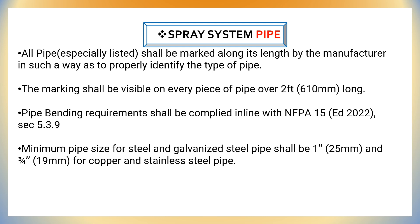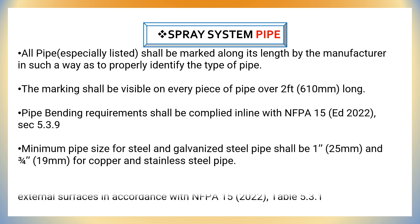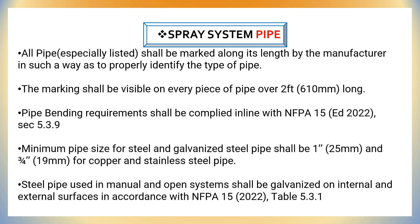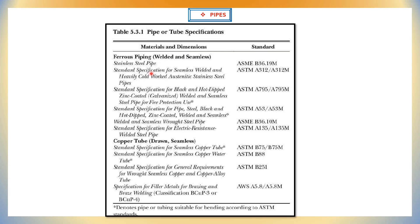Minimum pipe size for steel and galvanized pipes shall be 1 inch, and for copper and stainless steel pipe it should be 3/4 inch or 19 mm. Steel pipes used in manual and open systems shall be galvanized on internal and external surfaces in accordance with NFPA 15 table 5.3.1. We have extracted that table to get the specifications for pipes or tubes. The materials, dimensions, and applicable standards are shown on screen.